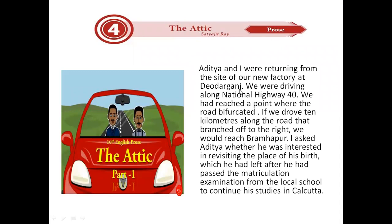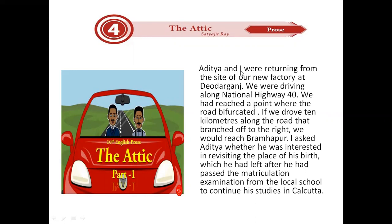In this lesson we have some characters. We have Aditya, his friend the narrator, and a person who is working in a tea shop. The narrator is just telling this story. Aditya and I were returning from the site of our new factory at Diodarganj. The narrator and Aditya were returning from Diodarganj, driving along the highway.